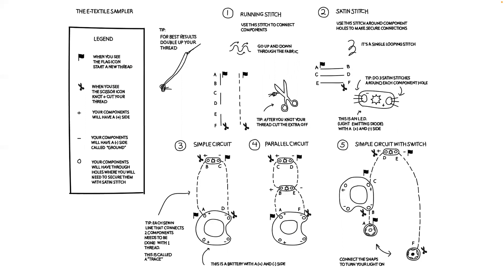For this beginner e-textile sampler, the five activities on the sampler included: one, how to use a running stitch to make traces; two, how to use a satin stitch to secure printed circuit board components; three, the design of a simple circuit; four, the design of a parallel circuit; and five, the design of a simple circuit with a switch.